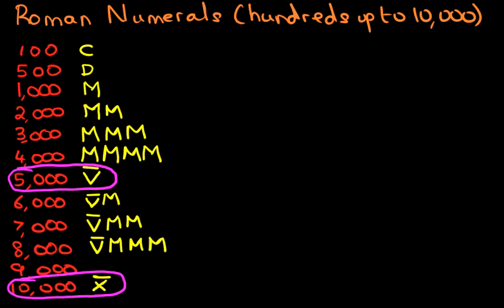Now we still haven't done nine thousand yet. Nine thousand is M followed by X with a dash on top. You may also see in some textbooks or worksheets that four thousand can also be written as M with a V on top — that is one thousand before five thousand. But we're going to use four M's because that is the most common method.